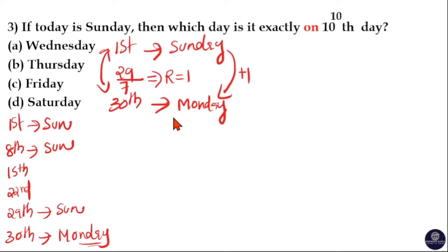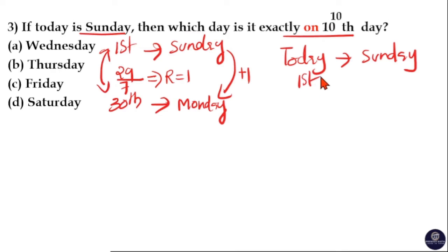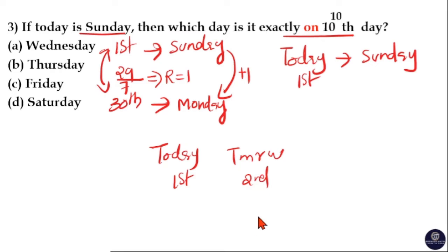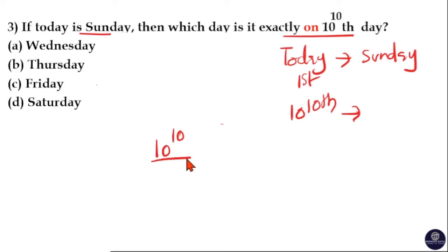Now, if today is Sunday, what is exactly the 10 raised to 10th day? Today is Sunday, which means the first day is Sunday — today is the first day. Note: tomorrow is the second day; don't consider tomorrow as the first day because today is already the first day. Now, here I am taking 10 raised to 10 divided by 7 directly to find the remainder.